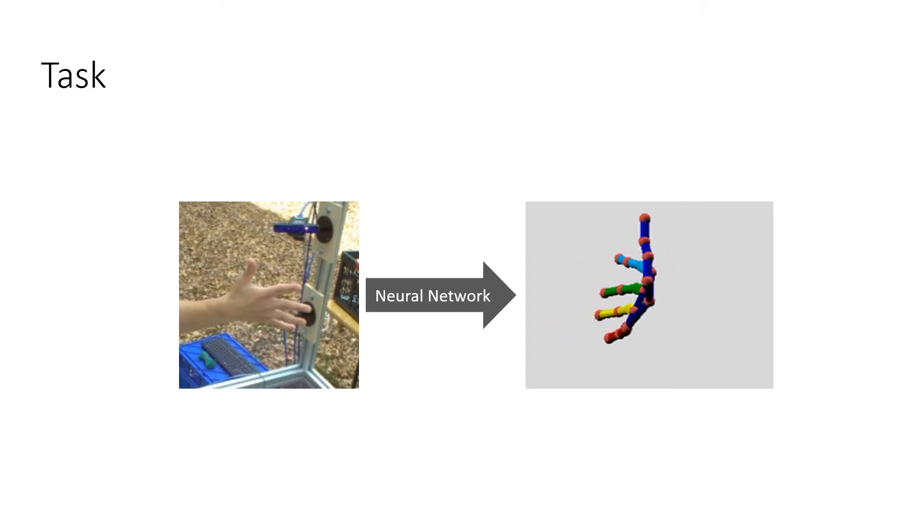As the title suggests, the task addressed by this project is 3D hand pose estimation. Simply stated, given a monocular RGB image, we would like to regress the full 3D hand pose using neural networks. This is a rapidly growing area which has been addressed in various forms by prior work.